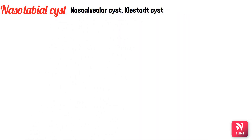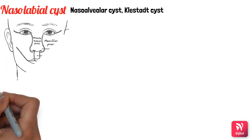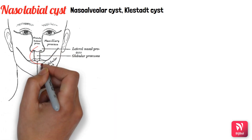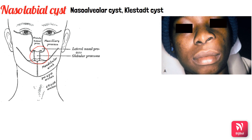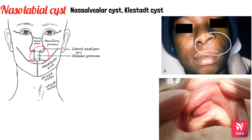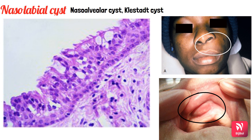The nasolabial cyst, also called the nasoalveolar cyst or Klestadt's cyst, is a rare fissural cyst formed along the junction of the globular process of the median nasal process, the lateral nasal process, and the maxillary process, from epithelium entrapped along this fusion line. Clinically, it appears as a swelling of the upper lip lateral to the midline, with elevation of the ala of the nose. Intraorally, there is obliteration of the vestibule and the maxillary mucobuccal fold. Histopathologically, it contains pseudostratified columnar epithelium with numerous goblet cells and cilia.